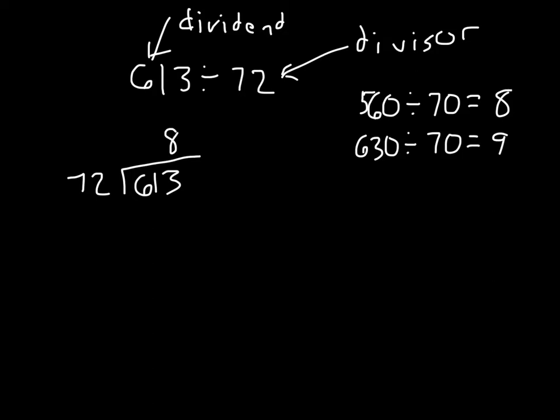Let's try 8. 8 times 72. 8 times 2 is 16. 6, regroup the 1. 8 times 7 is 56, plus 1 is 57. Let's subtract that. Let's see.